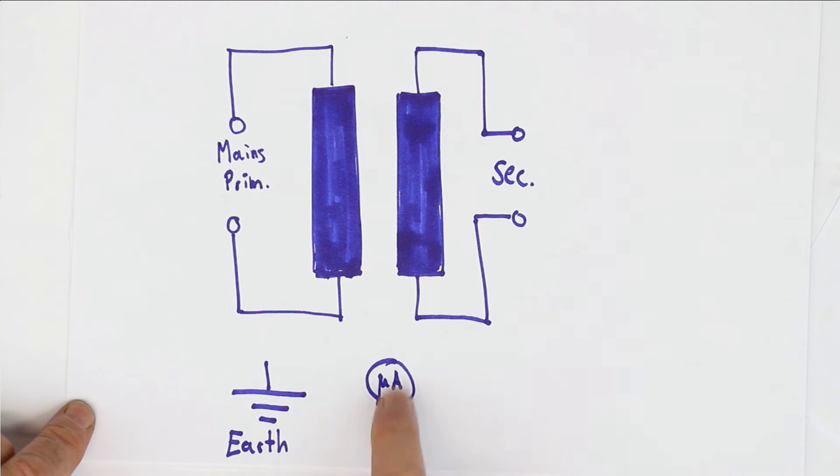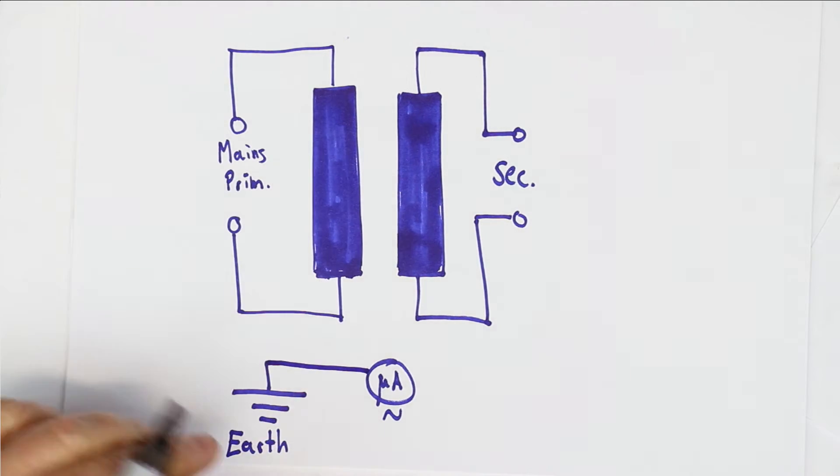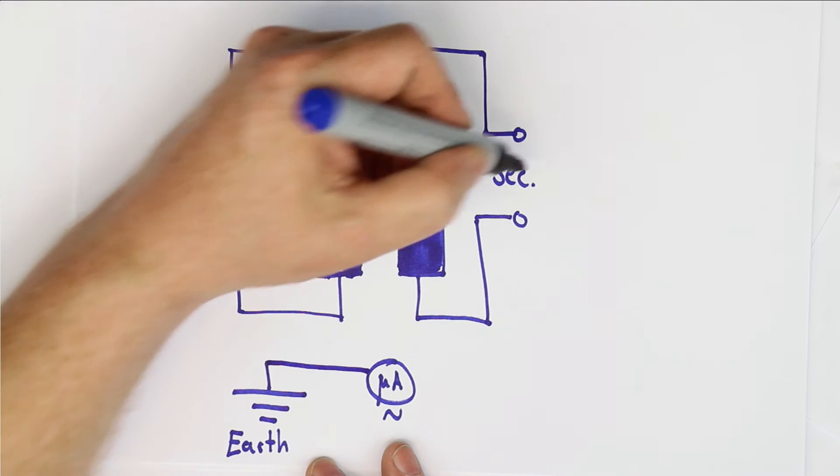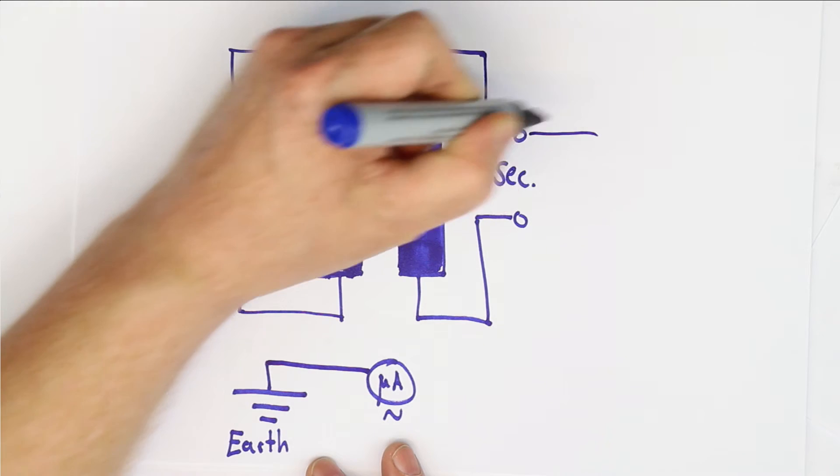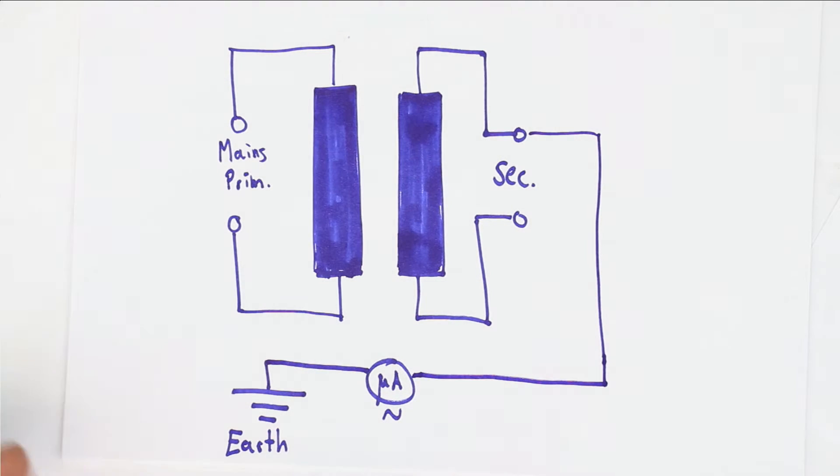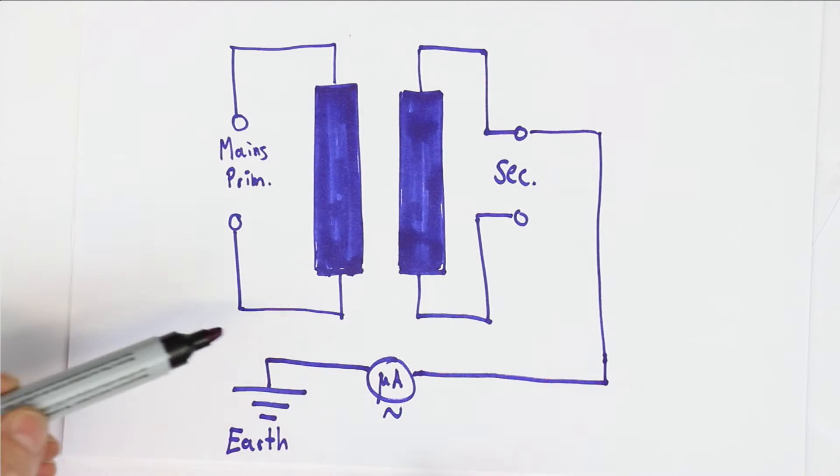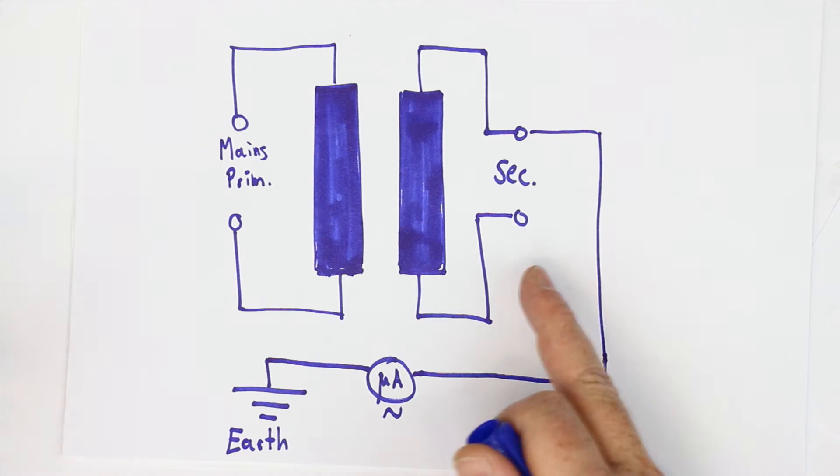We had our multimeter set to microamps in AC mode, and we had earth. Now, how was the connection? One side of the multimeter was connected with earth. The other side I tapped off one point of the secondary winding. Now you may wonder, there cannot be any current flowing because one side is open, so apparently there cannot be any current flowing.